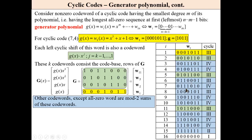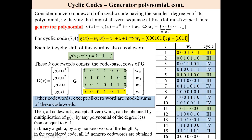Then we will obtain remaining 15 codewords of this code. Let me repeat. Cyclic code can be described by a generator polynomial. Generator polynomial is a codeword of a cyclic code having the smallest degree m of its polynomial.